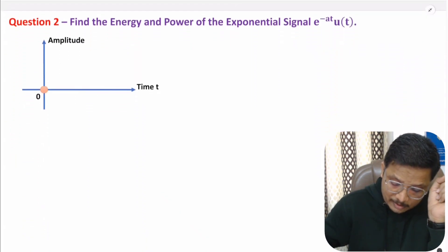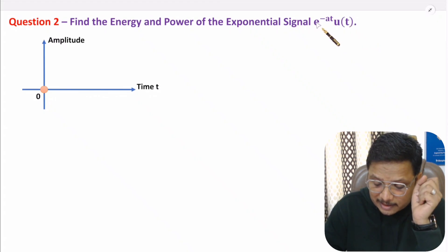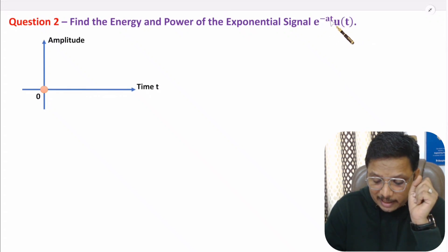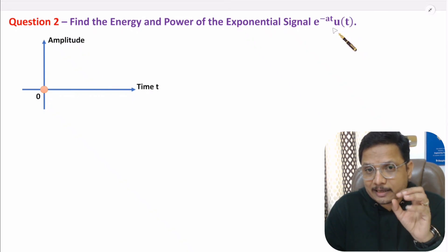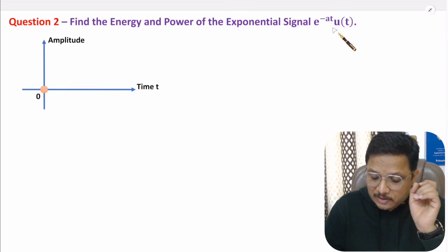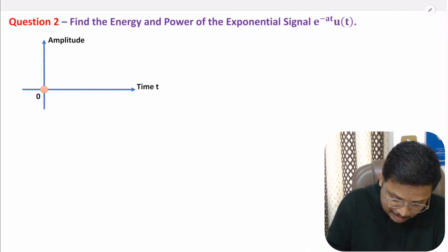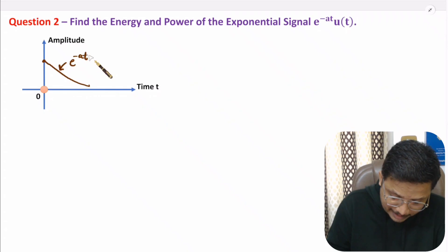Now I will explain the second example, which is based on identification of energy and power for the exponential signal e to the power minus at into u(t). Here u(t) is multiplied with e to the power minus at. U(t) has magnitude 1 for t greater than or equal to 0 and magnitude 0 for t less than 0. So if you multiply by u(t), the signal only appears for t greater than or equal to 0, giving us e to the power minus at.